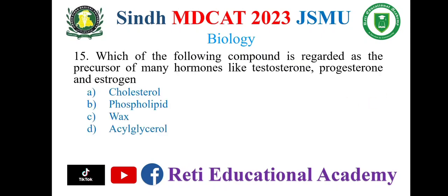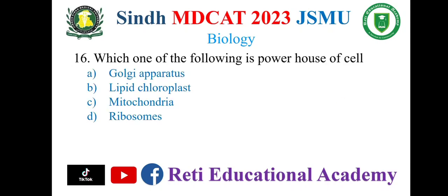Question number 15. Which of the following compound is regarded as the precursor of many hormones like Testosterone, Progesterone, and Estrogen? A. Cholesterol, B. Phospholipids, C. Wax, D. Acylglycerol. And the correct option is A. Cholesterol.